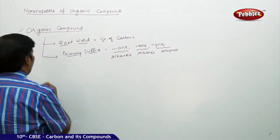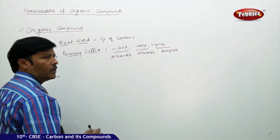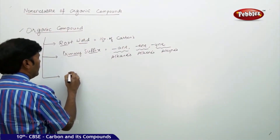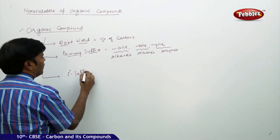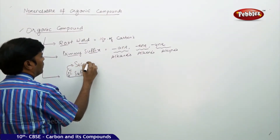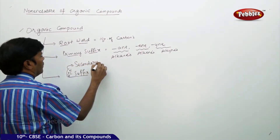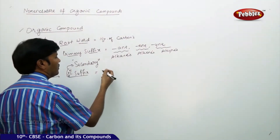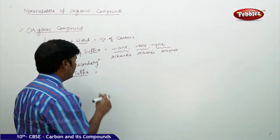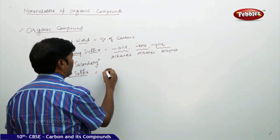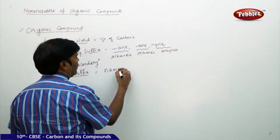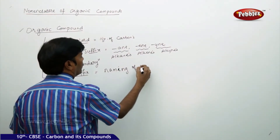Apart from this, it also has a secondary suffix. The secondary suffix actually gives the technical name of the functional group — secondary suffix is nothing but the naming of the functional group.